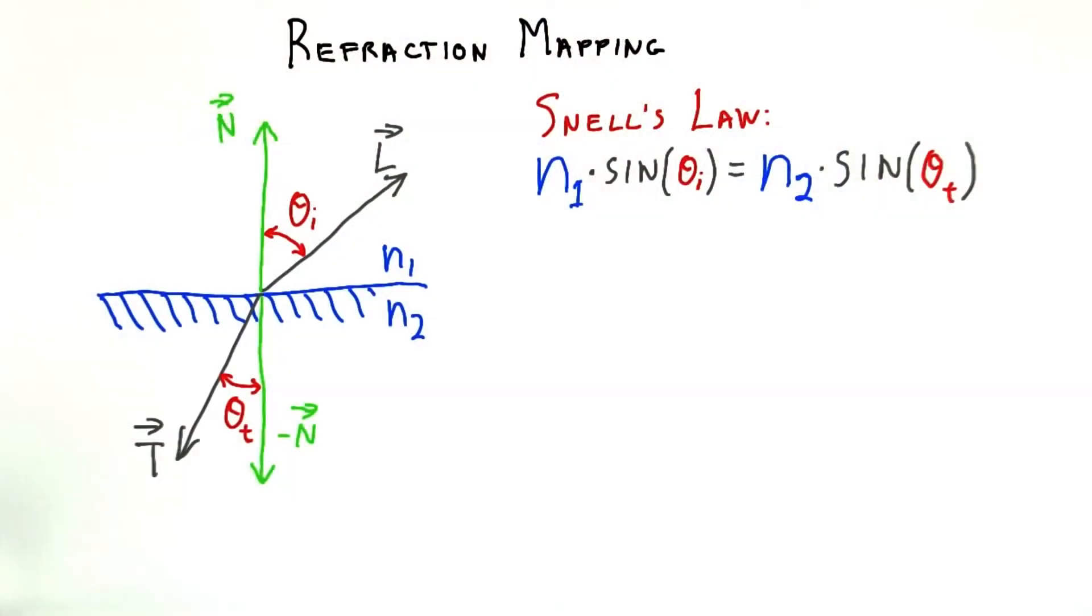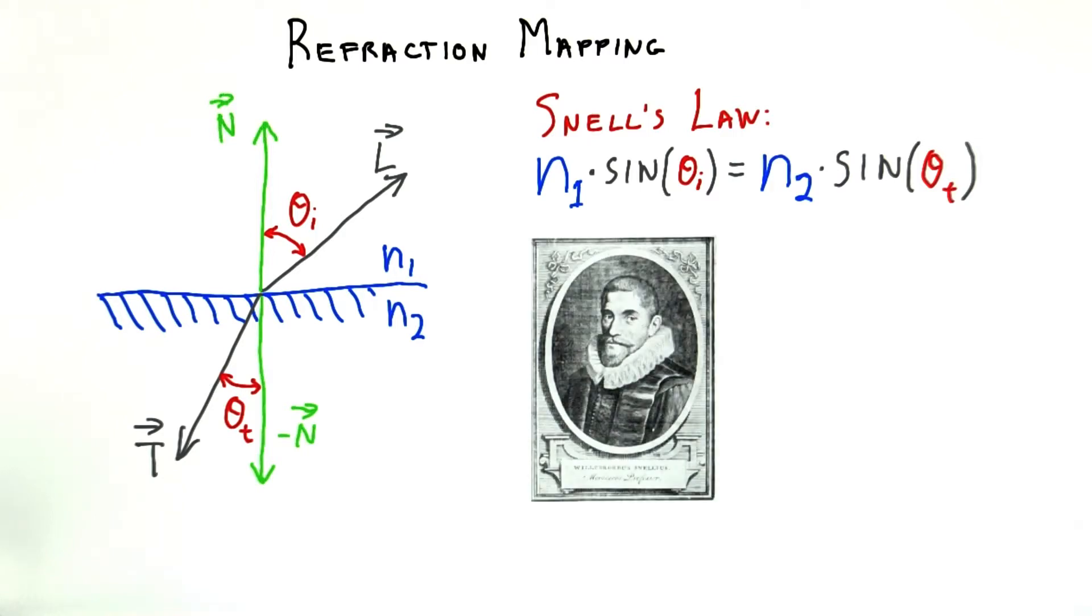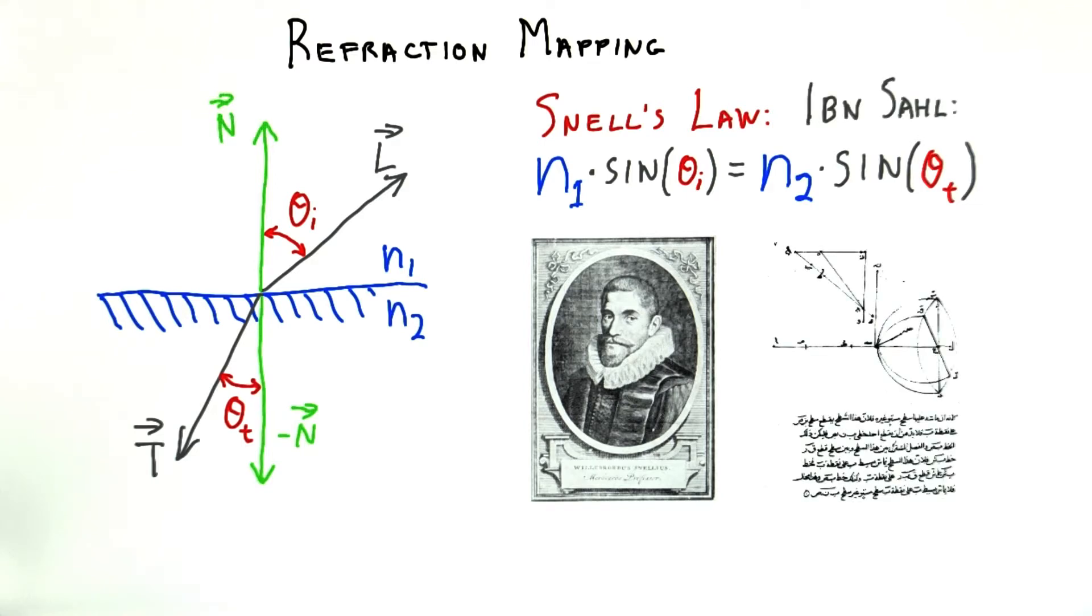Snell's Law is what's normally used for computing the refraction direction. It's named after Willebrod Snellius, a Dutch astronomer and mathematician from the 17th century. However, it turns out that Ibn Sal, a Persian mathematician, discovered this back in 984 AD. This is an old formula and is as follows.